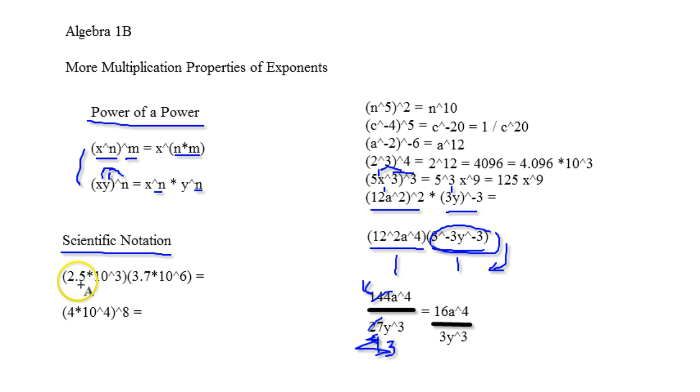So when you're multiplying two scientific notations together, what you're going to do is you're going to literally multiply the numbers in front together. So you're going to go 2.5 times 3.7 and I get 9.25, and that's going to be my first number, and that's the beautiful thing about it.